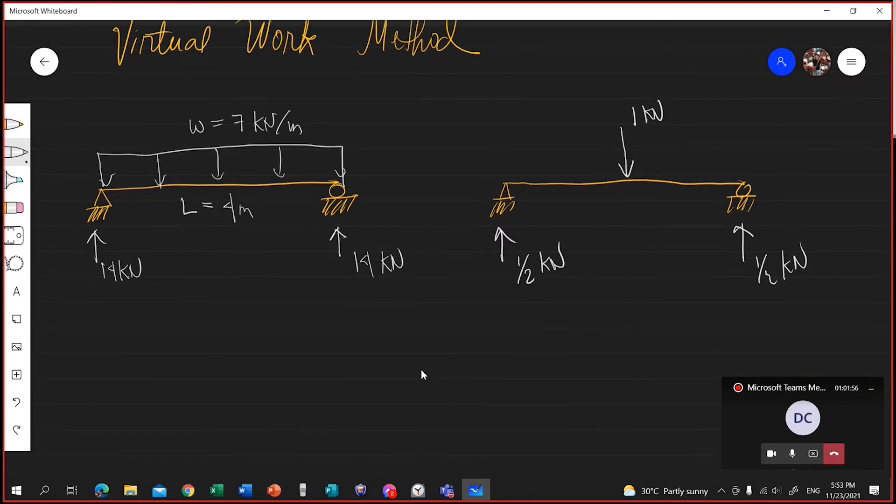Now, we will solve for the moment. There are segments. The original beam has one segment because the loading is continuous, uniformly distributed. So one segment. But because of the unit load, we'll have two segments. Let's name the segment as A, and at the mid-span B, and here C. So it's A, B, C. So there are two segments. You have segment A-B and segment B-C.